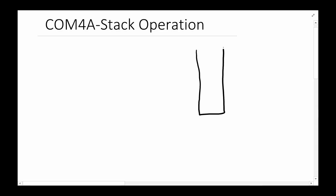The way we draw a stack is usually like a box. Every time you write something it sits here, write a new thing it sits here, write a new thing it sits here. So a stack is a collection of items. In our particular case, the content of the stack is the PC — the program counter. At any given point in time you put the program counter in there, so this might be 0x296, 0x3720, or 0x4562.